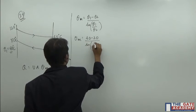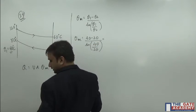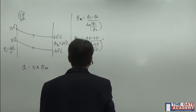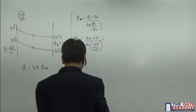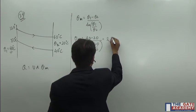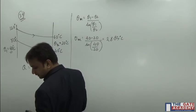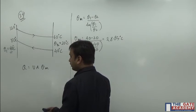Now theta m is 40 minus 20 divided by ln of 40 by 20, and you are going to obtain theta m as 28.85 degrees Celsius.